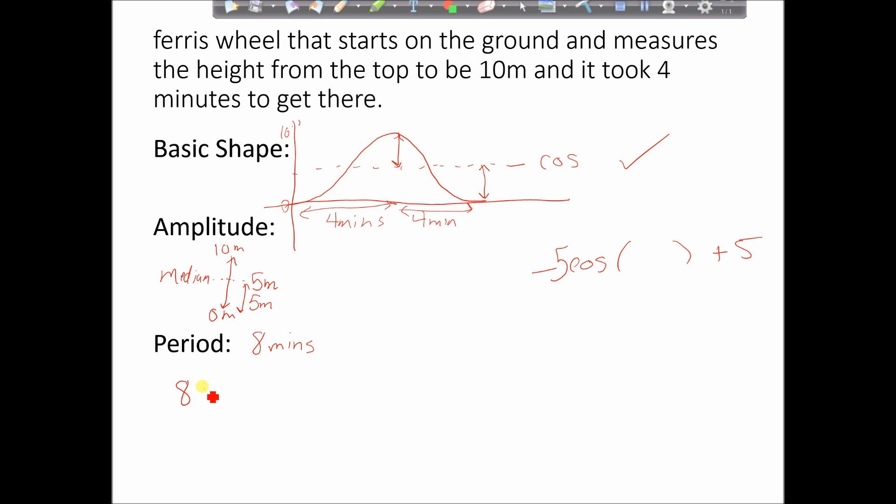So I know that I want my period to be eight, and the period is of the form 2π over n. So I need to solve this equation for n. So I can do that by multiplying on both sides by n. That will give me 8n is equal to 2π. And then I would divide by eight, so I get that n is 2π over 8, which of course simplifies to n just being π over 4.